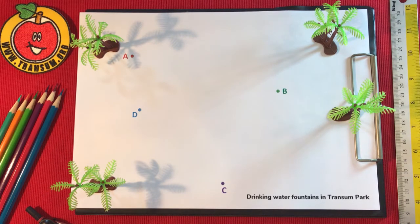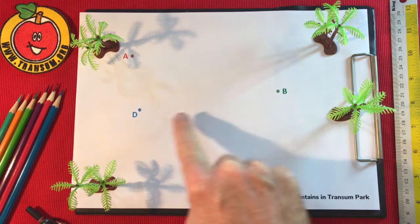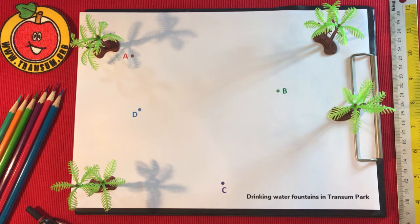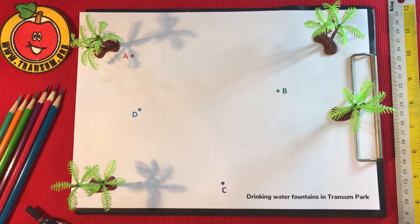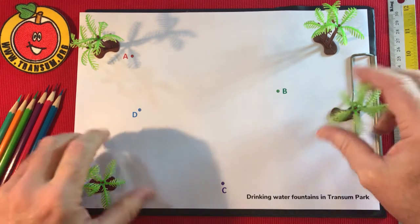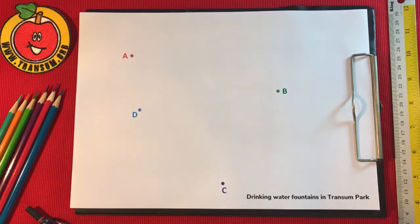Believe it or not, this is a map of Transom Park and it shows the locations of the drinking water fountains within the park. We're going to draw some lines on the map that split up the park into regions, and if you're in a particular region it'll be quite clear which is the nearest drinking water fountain to you.